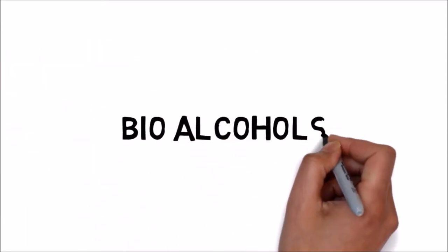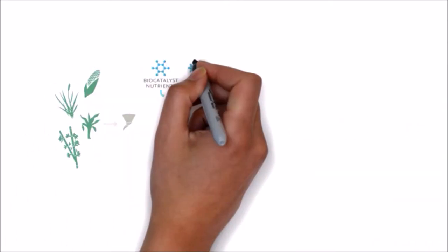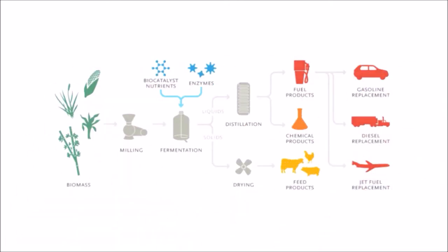Bioalcohols. These are alcohols made by the use of mixes and microorganisms through the system of development of starches and sugar. Ethanol is the most generally perceived sort of bioalcohol, however, butanol and propanol are a part of the lesser known ones.